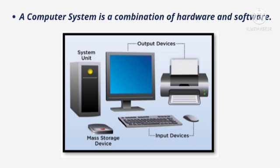In this particular image you can see a computer system. What we have in this system is: the system unit which is the CPU, a mass storage device which is an external hard disk, input devices which are the keyboard and mouse, and output devices which are the monitor and printer. So a computer system is a combination of hardware and software, and together they produce a particular result.